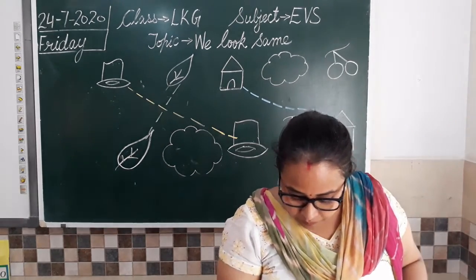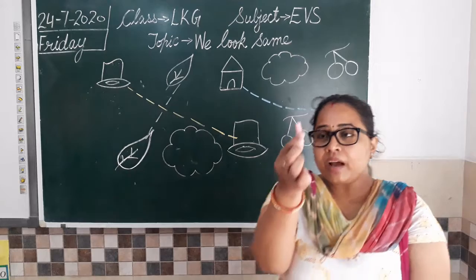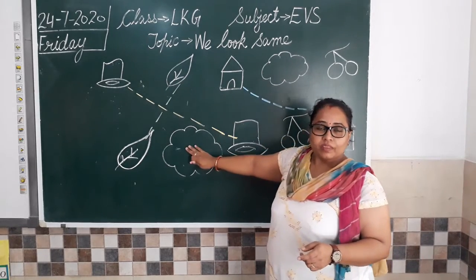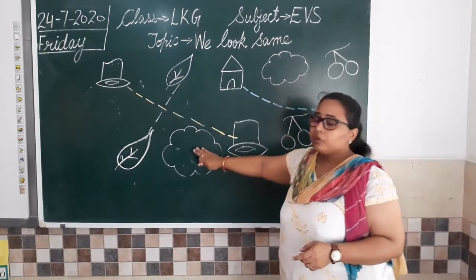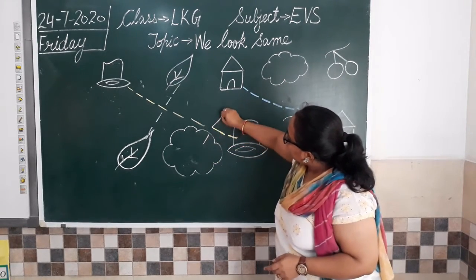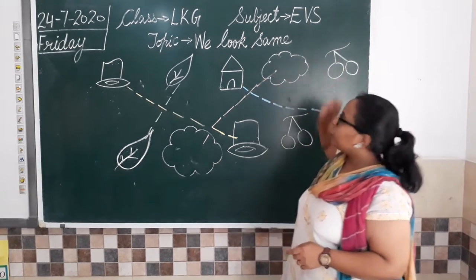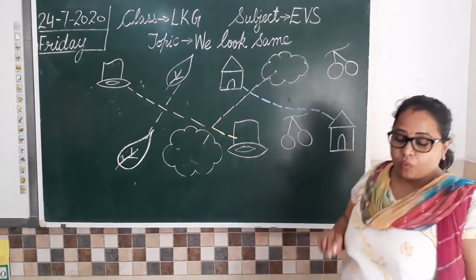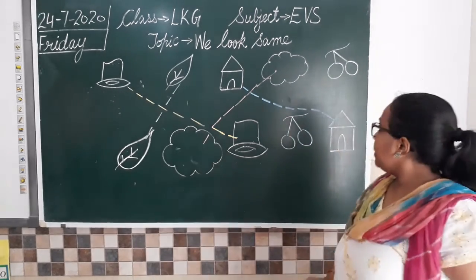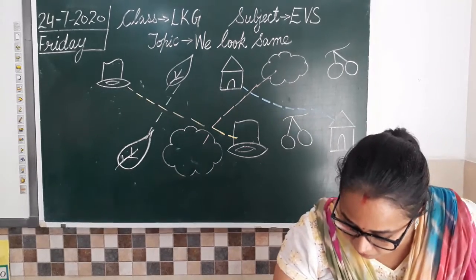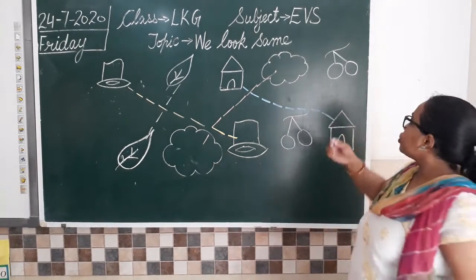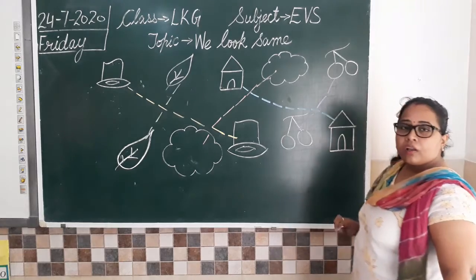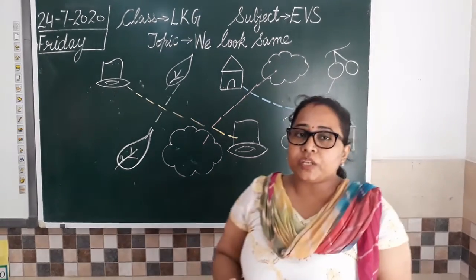The next picture is a cloud, and for cloud I am taking a different color — I am taking red color. This is a cloud, and where is the other cloud? Here we have it. Now what we have to do? We have to match them. Like this I am going to match the two clouds. Now the last picture we have is cherry. Now can you tell me where is the other cherry? I will change my color — I have taken a different color chalk. Now we are going to match cherry with cherry. That's how you match similar-looking objects with each other.